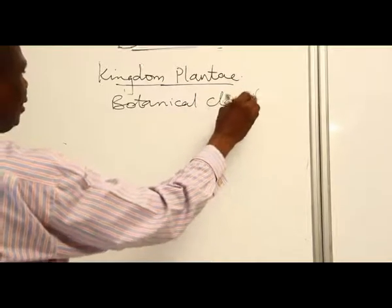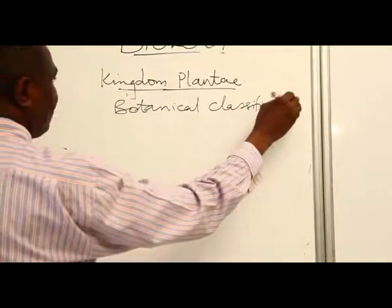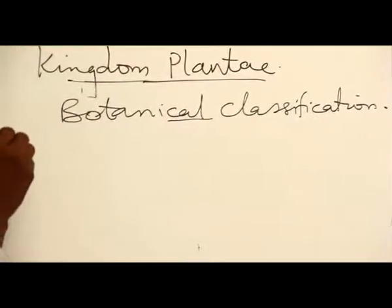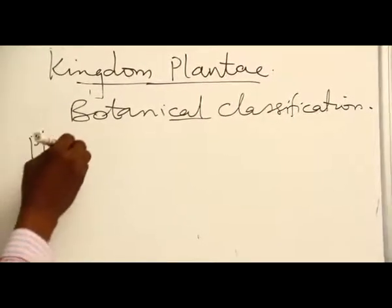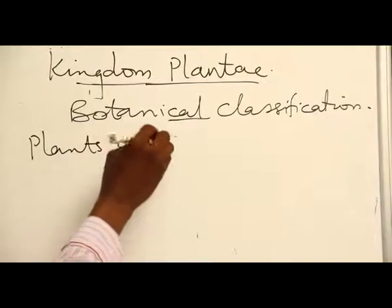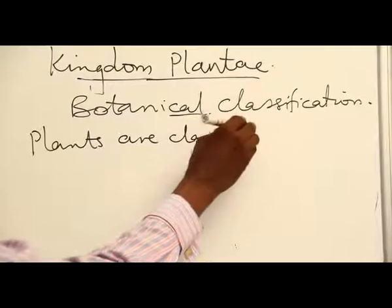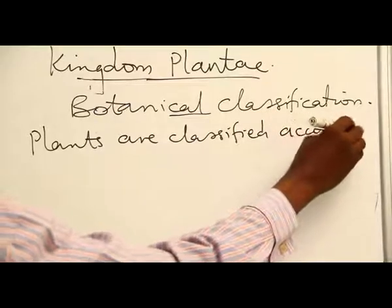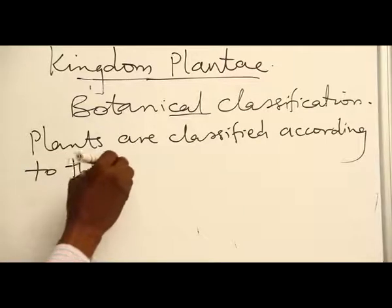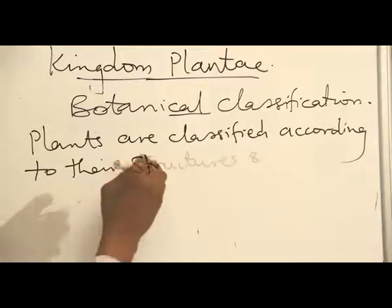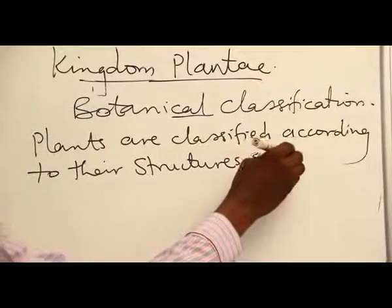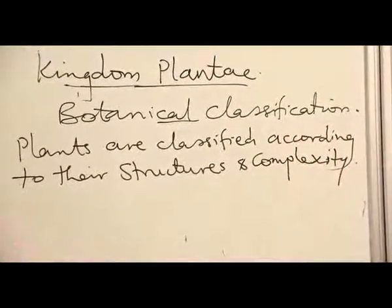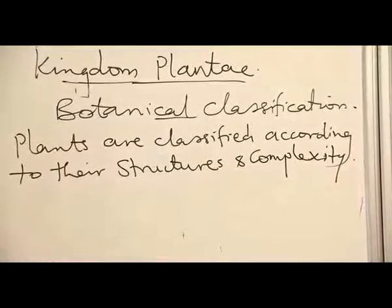Botanical Classification. Plants are classified according to their structure and complexity, and this gives us about four divisions.